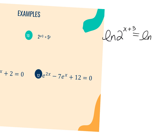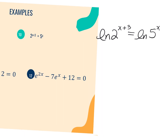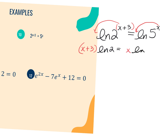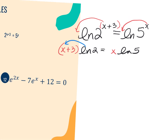Same thing on the other side. Just like in Algebra 1 where you learned inverse operations — adding the same number to both sides — I can add a natural log to both sides. Now I'm going to apply my power property and pull these powers down in front of the natural log. So now I have x plus 3 times the natural log of 2 equals x times the natural log of 5.